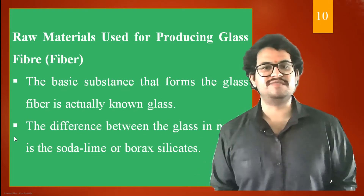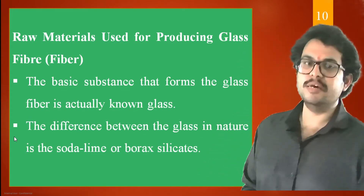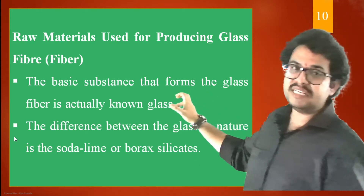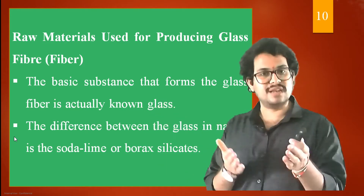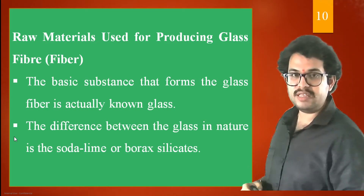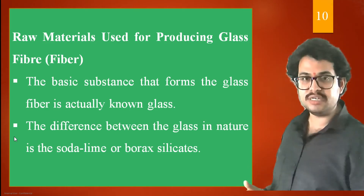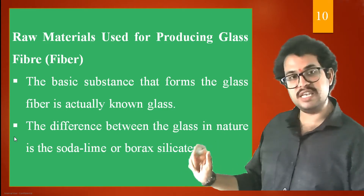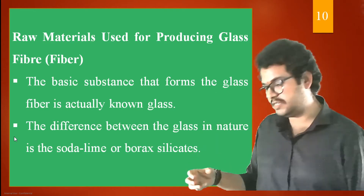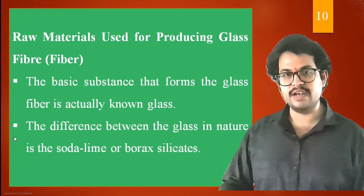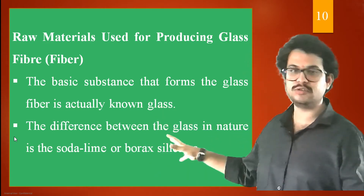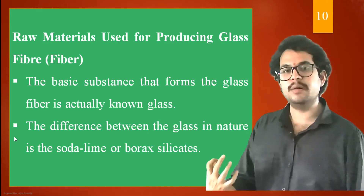What are the raw materials used for producing a glass fiber? The very basic ingredient that forms the glass fiber is glass. The difference between glasses in nature is the soda lime or borax silicates — that is what differentiates naturally available glass types.